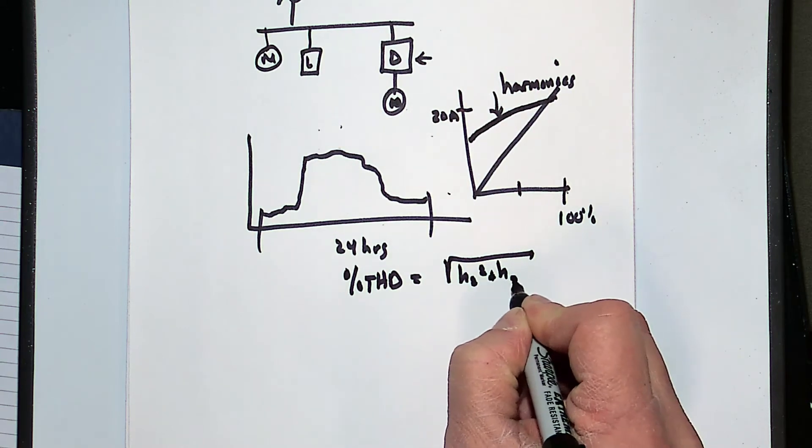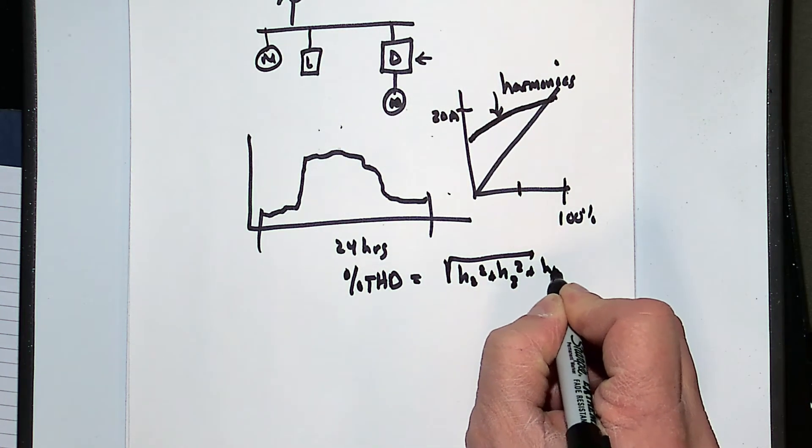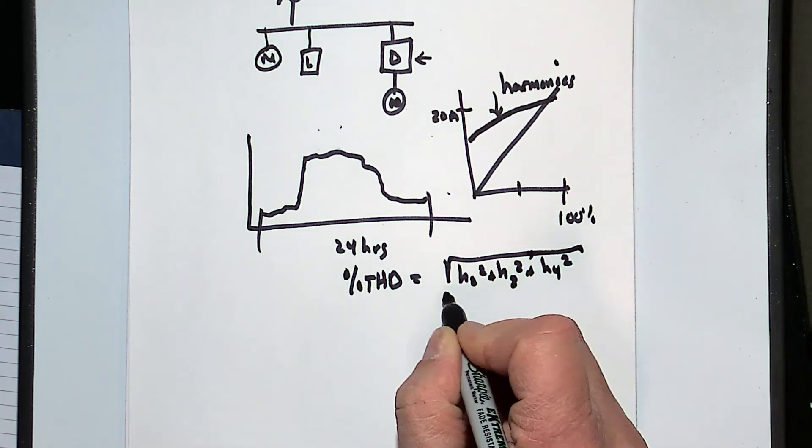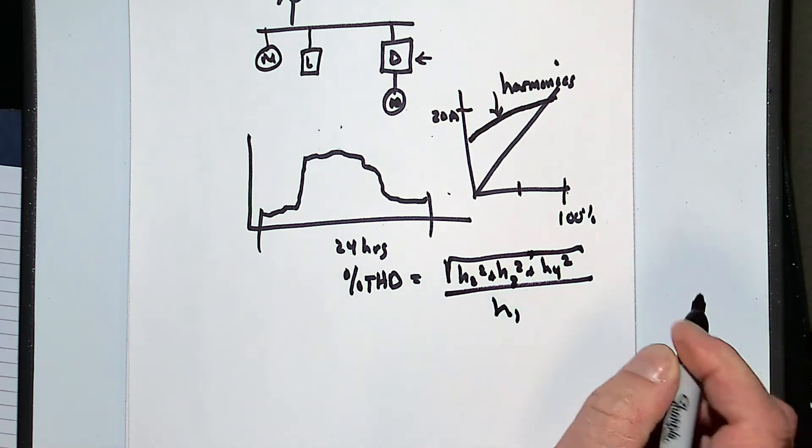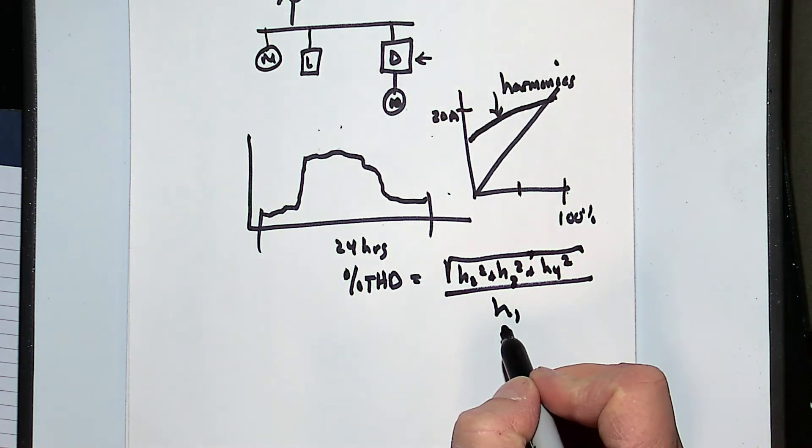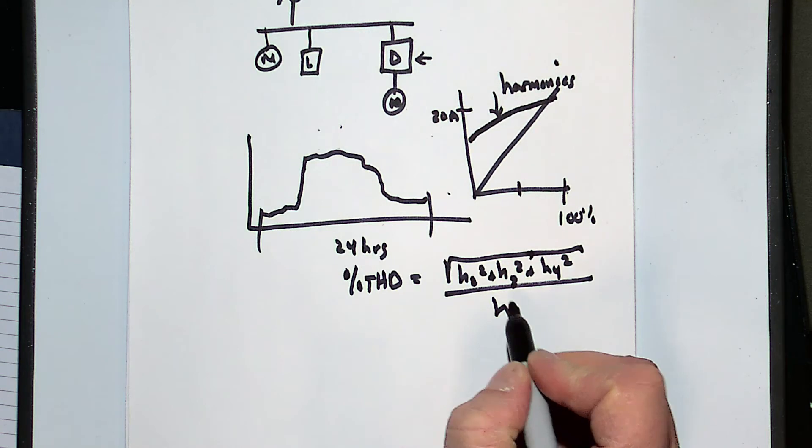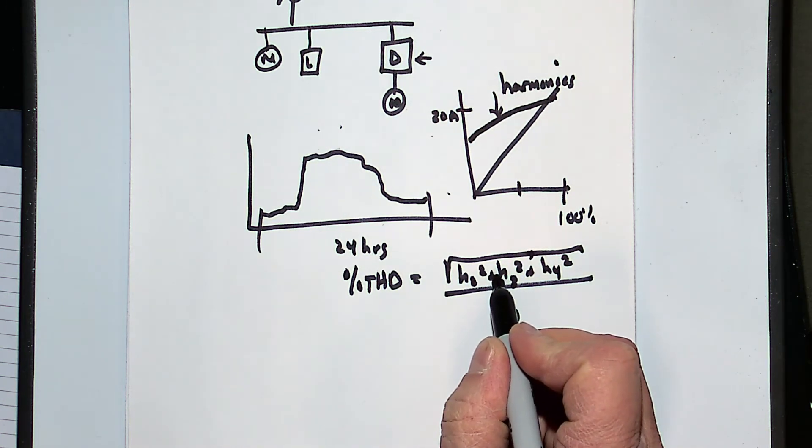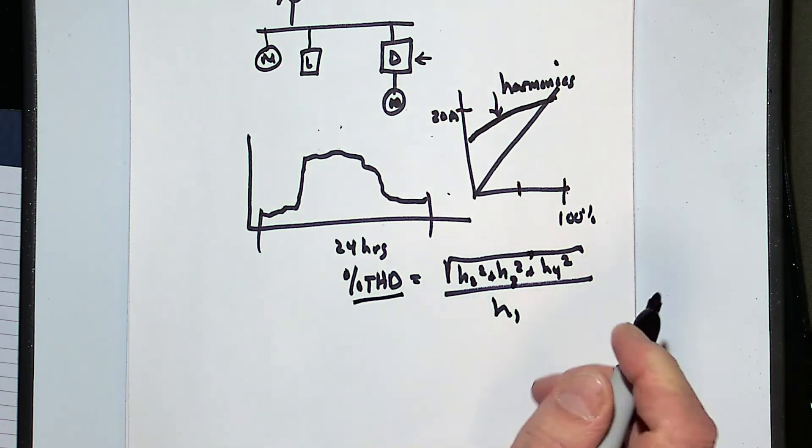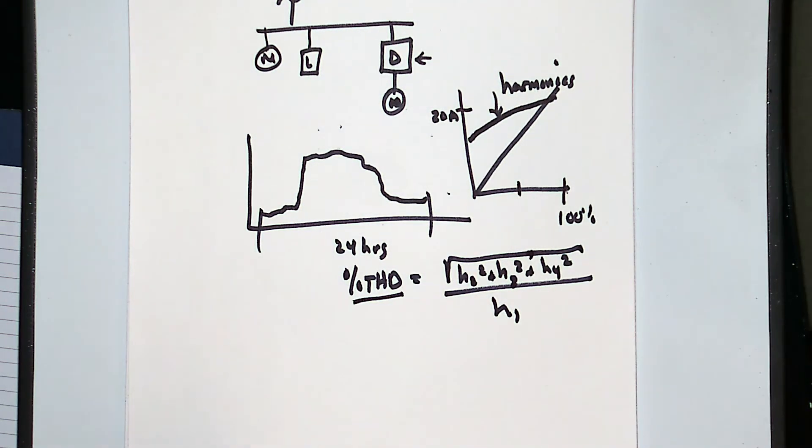H2 squared plus H3 squared plus H4 squared, and so on, divided by the fundamental. Because the fundamental changes linearly and the harmonics do not change linearly, my percent THD overnight and in times of light load will become a much bigger number.